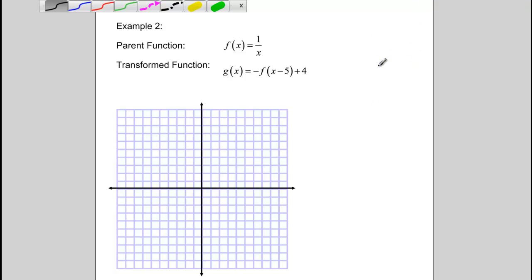Alright, our second example is using the parent function 1 over x. Remember, this is called our inverse function, and it is one of the tougher ones to graph, so that's why I picked it. Our transform function here is g(x) = -f(x-5) + 4. We're still using function notation. This x minus 5 is replacing our x. We have a plus 4 here on the outside, and we have a negative here on the outside.